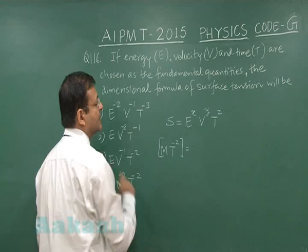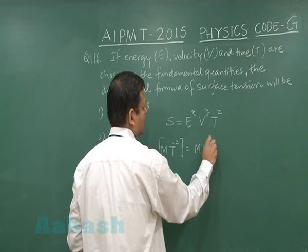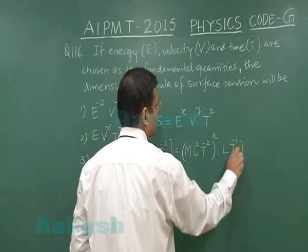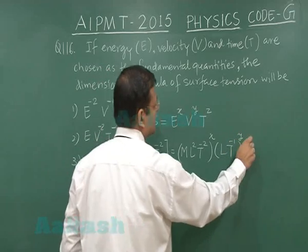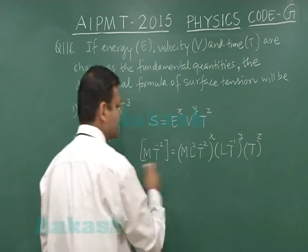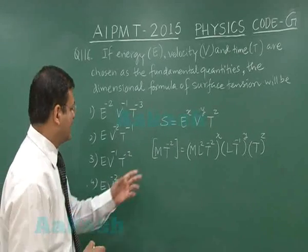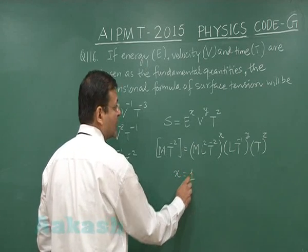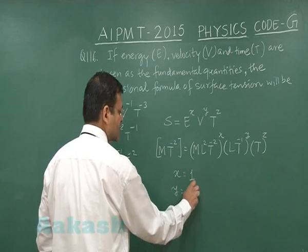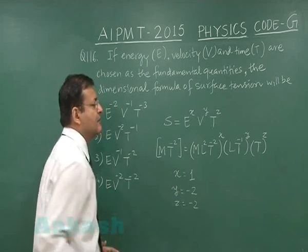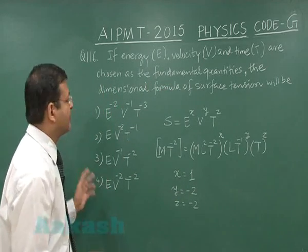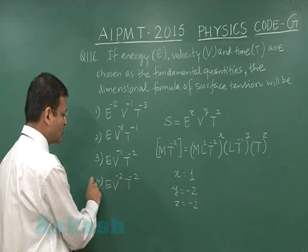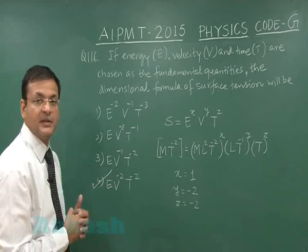Energy is M L^2 T^(minus 2) to the power x; velocity is L T^(minus 1) to the power y; and time is T to the power z. Balancing powers of M, L, and T gives x = 1, y = minus 2, and z = minus 2. Back-substituting gives the expression E^1 times v^(minus 2) times t^(minus 2), so the most appropriate option is four for question 116.